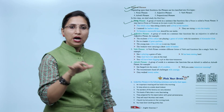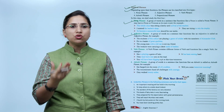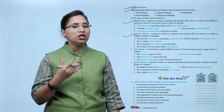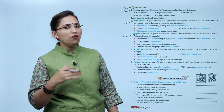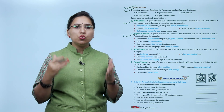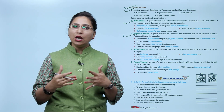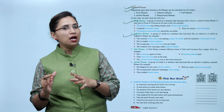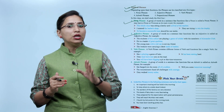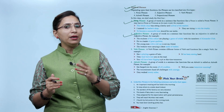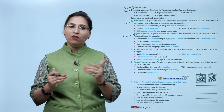Adjective phrases: A group of words in a sentence that functions like an adjective is called an adjective phrase. Jo adjective ki tarah function kare, unko adjective phrases bolte hain. For example: 'The students of this school are playing a game of cricket with the members of Alexander's club.' 'He is a leader of great qualities.' 'The young man with a red cap is not my friend.' 'The workers were carrying a chest made of leather.'